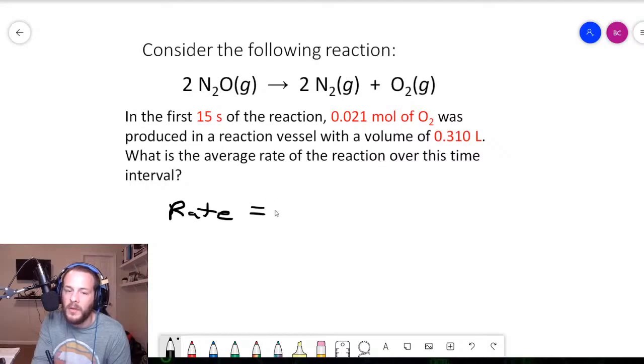And also, that one over the coefficient term becomes, let's just say, that term becomes mathematically unnecessary here, because the understood coefficient in front of this oxygen is one. So it would be one over one times, you get the idea. We don't have to include that term because it's all ones. So really, the rate is going to be delta oxygen concentration, O2 in brackets, divided by delta t.